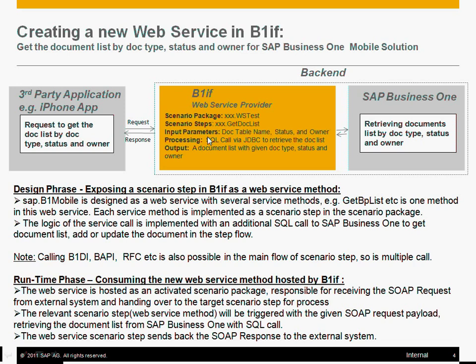We'll have some inbound parameters, like the table name — maybe sales order (ORDR), maybe invoice (OINV). During the process, for the first simple scenario, we would just like to get the sales order document list. In B1IF, one basic scenario step represents one method — "get doc list" is one method for the web service. Then in the next topic, we'll see how to consume the web service hosted by the B1IF, specifically how to consume it with a .NET project.